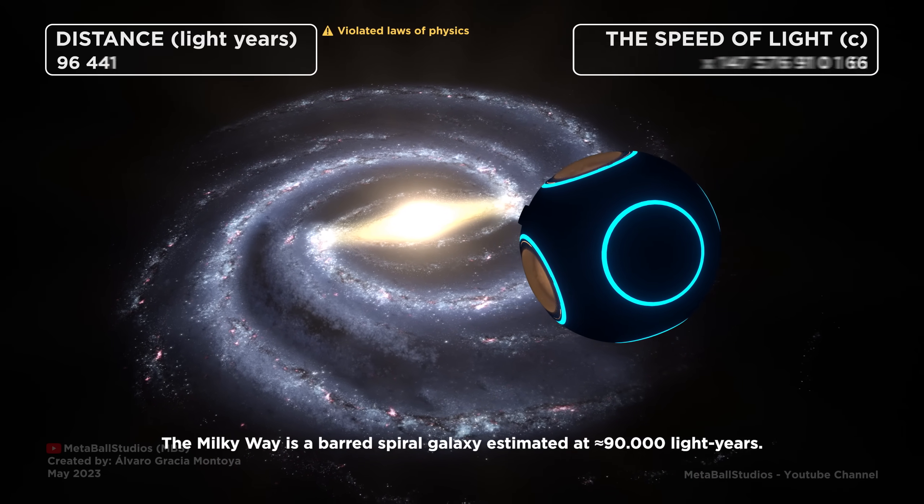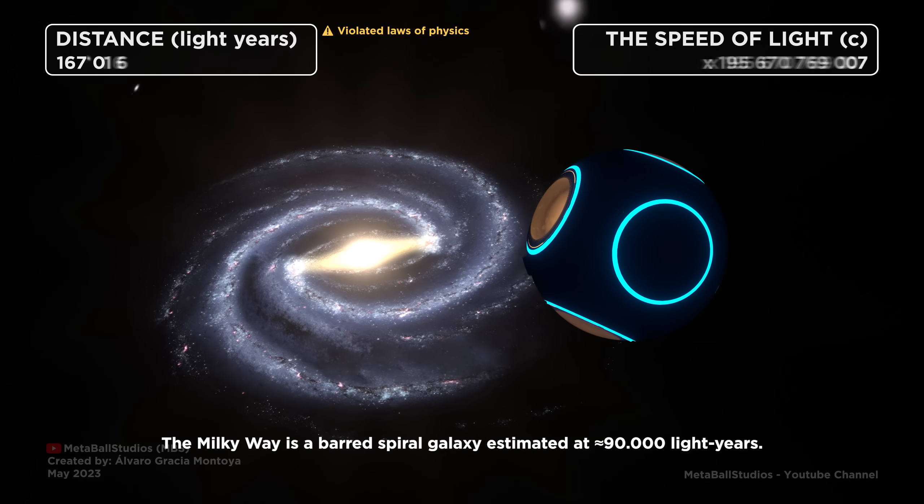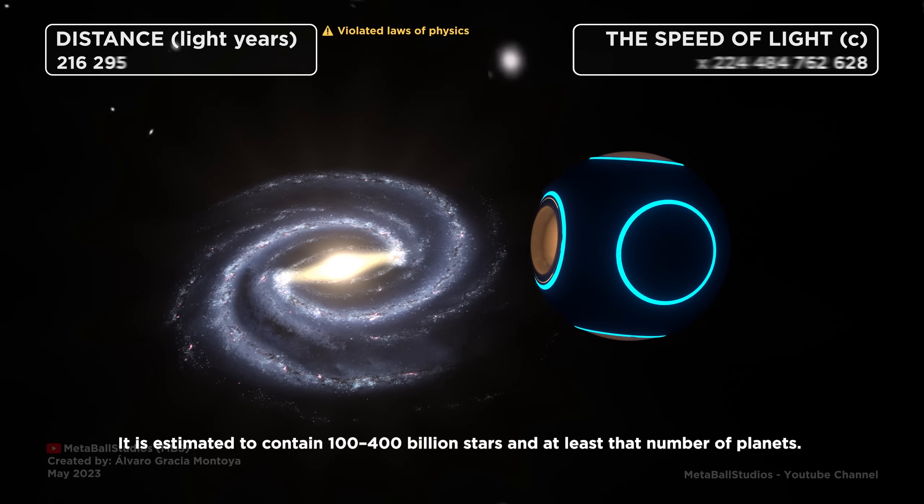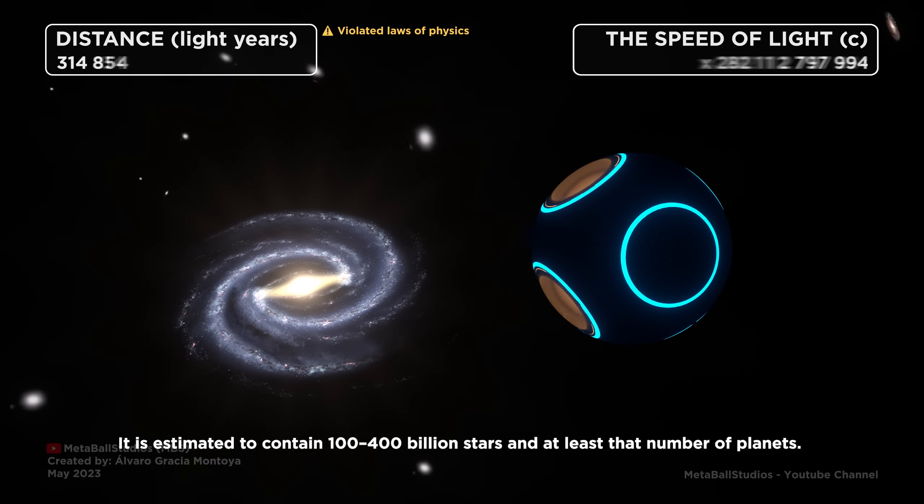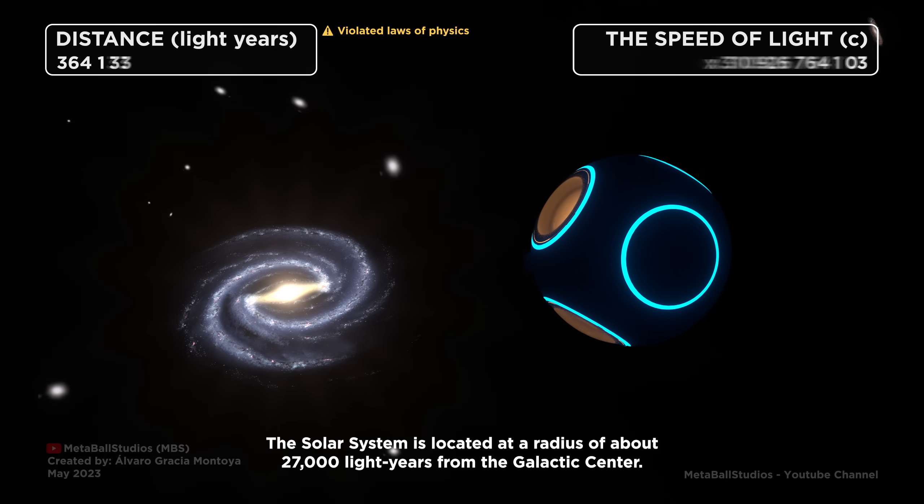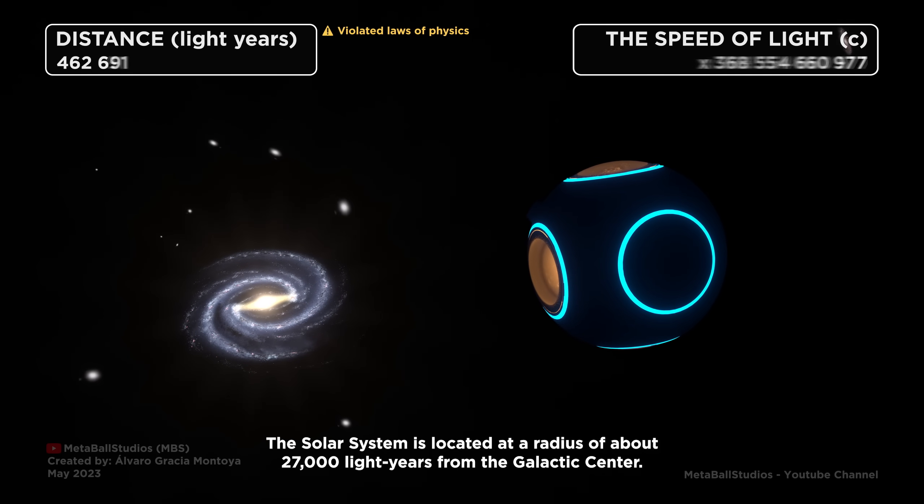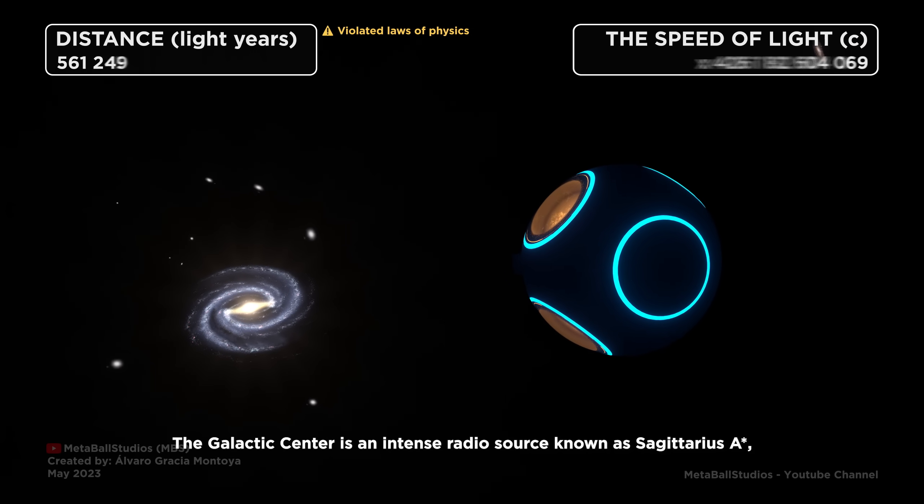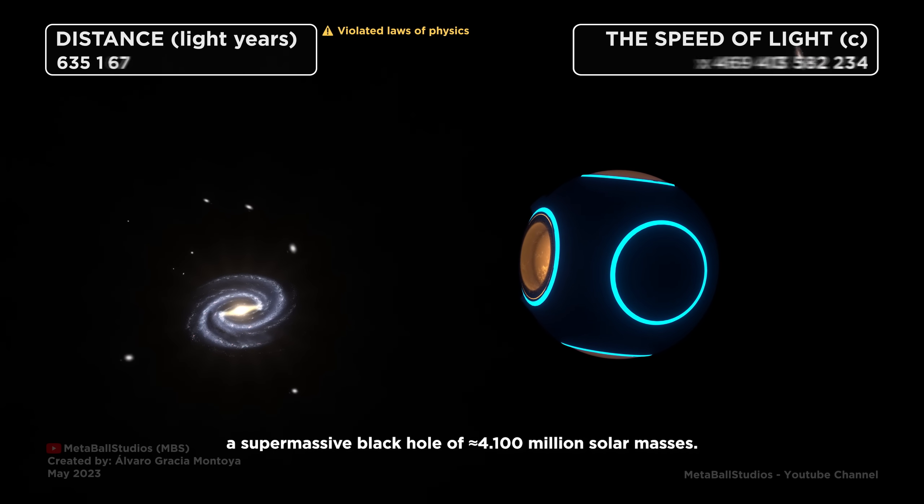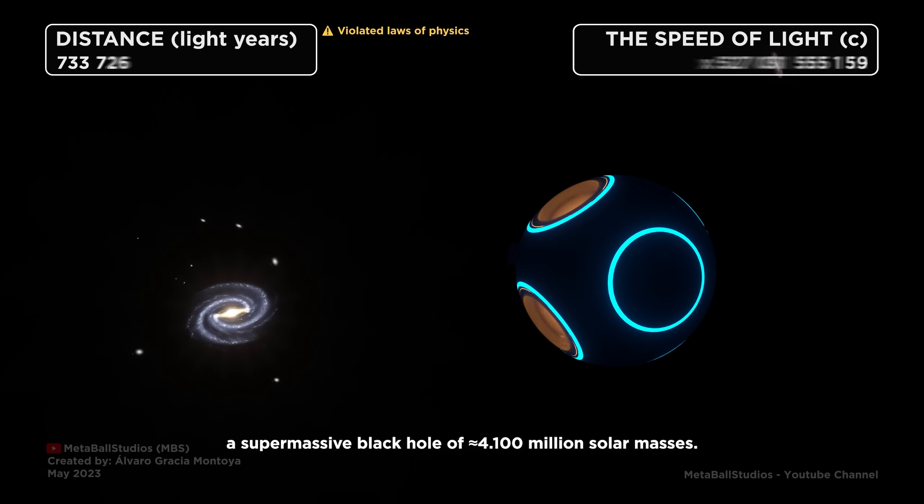The Milky Way is a barred spiral galaxy estimated at 90,000 light years. It is estimated to contain 100 to 400 billion stars and at least that number of planets. The solar system is located at a radius of about 27,000 light years from the galactic center. The galactic center is an intense radio source known as Sagittarius A, a supermassive black hole of 4.1 million solar masses.